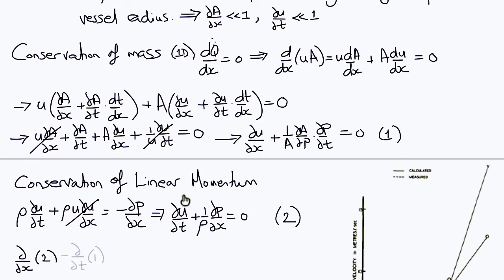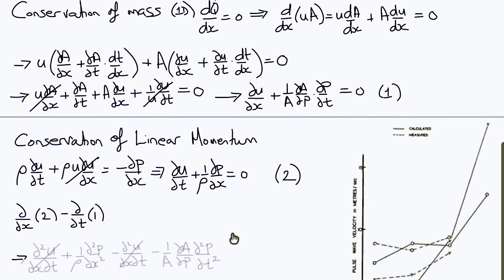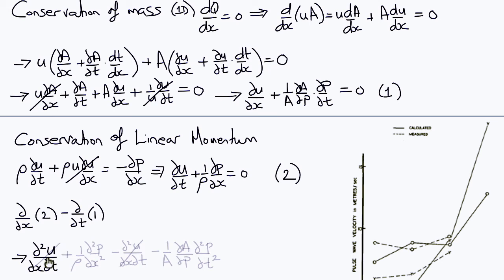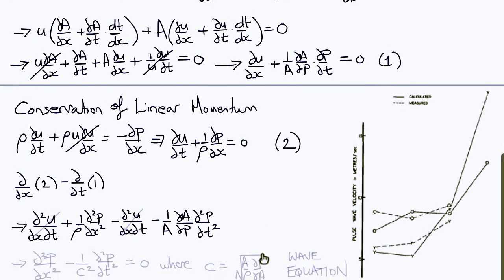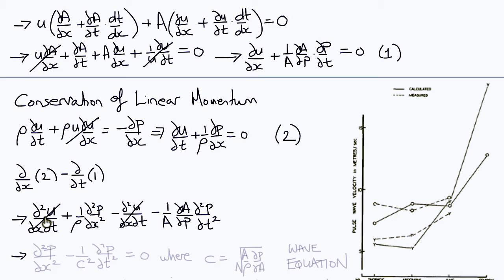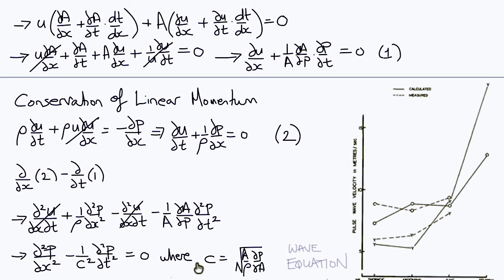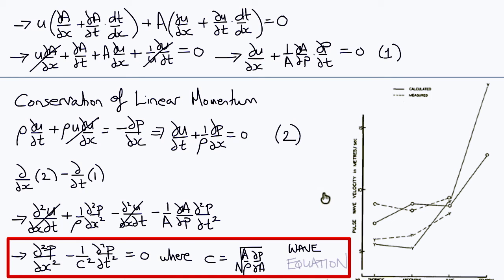Taking the derivative with respect to x of equation two and subtracting the derivative with respect to t of equation one, the mixed partial terms del squared u / del x del t cancel, leaving the second-order differential equation: del squared p / del x squared minus (1/c squared)(del squared p / del t squared) equals zero. The wave speed c equals the square root of (A/rho)(del p/del A). This is known as the wave equation.